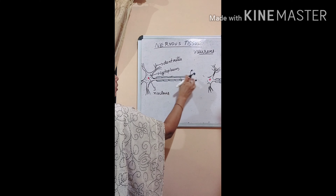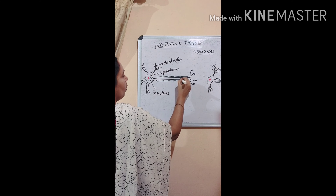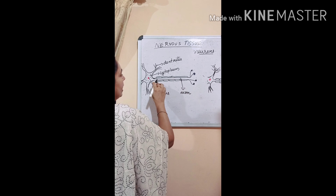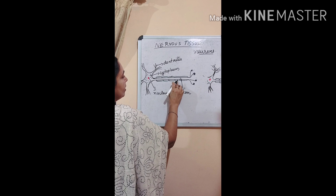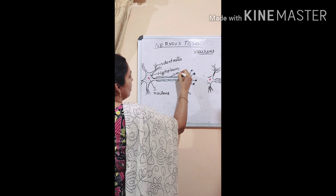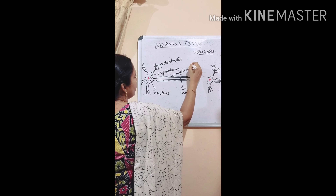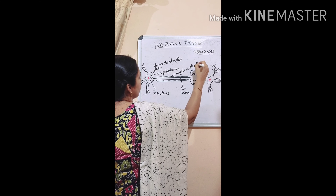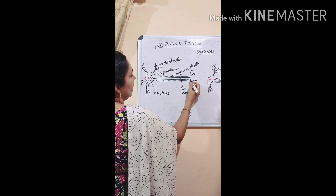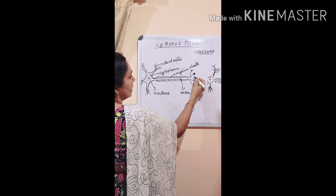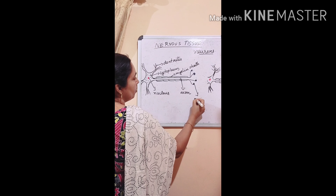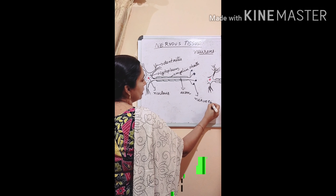One branch is a long branch and this long branch is called axon. This axon is covered or insulated by a sheath called the myelin sheath. At the tip of the axon, there are again some small branches, and the tip of these small branches is called the nerve ending.